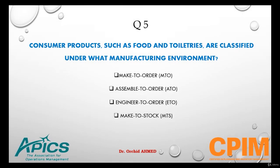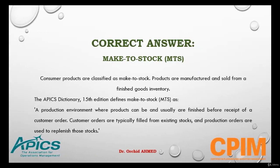Question 5. Consumer products such as food and toiletries are classified under what manufacturing environment? Make-to-order, assemble-to-order, engineer-to-order, or make-to-stock. Consumer products fall under make-to-stock, where products are manufactured and sold from a finished goods inventory. The APICS Dictionary, 15th edition, defines make-to-stock as a production environment where products can be and usually are finished before receipt of a customer order. Customer orders are typically filled from existing stock.